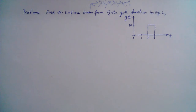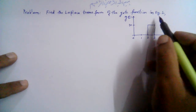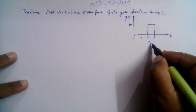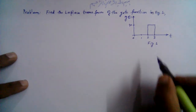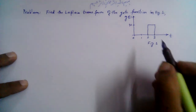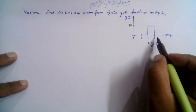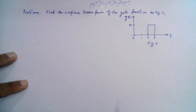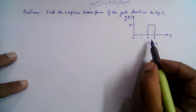Bismillahirrahmanirrahim. Find the Laplace transform of the gate function in figure one. This is the gate function — it has a value of 10 between t=2 and t=3, and is zero elsewhere. What we can do is represent this gate function in terms of a unit step function.